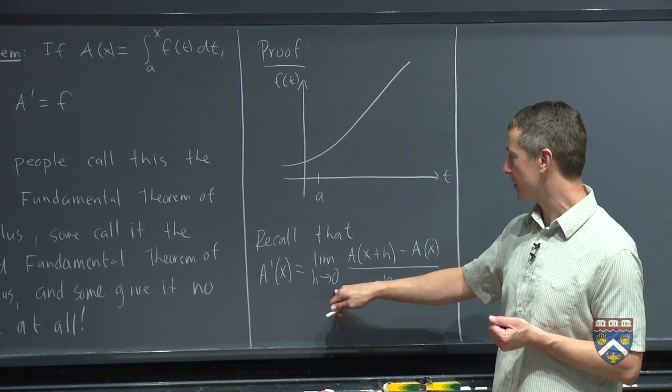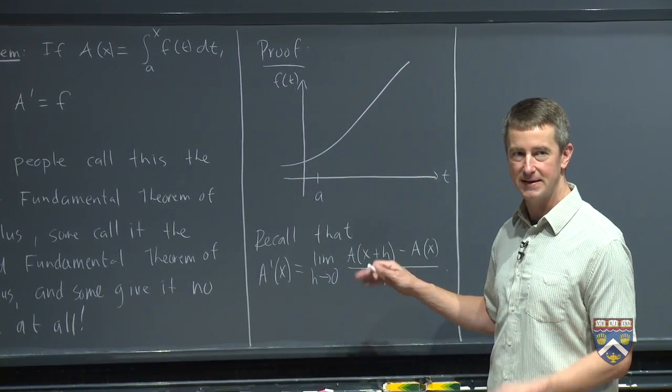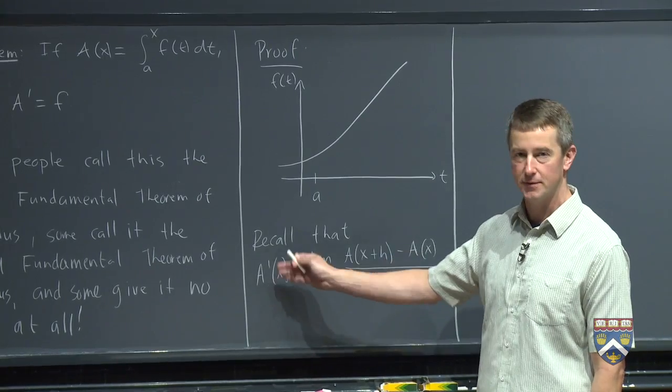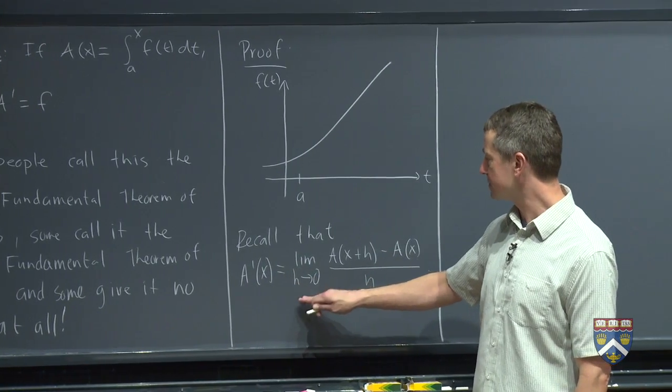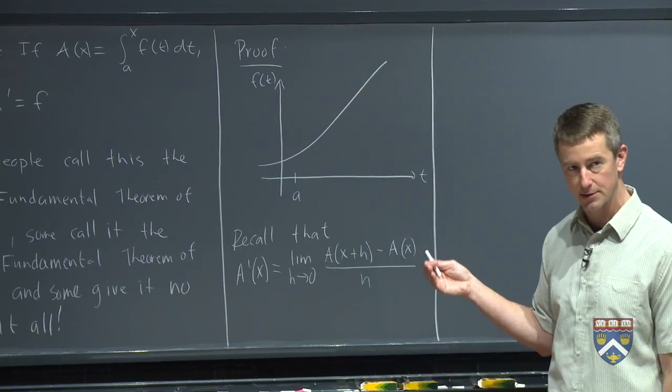So we can go back to our limit definition of the derivative. Remember that from a while ago? The limit as h goes to zero. Normally, we would write f's up here, but in this case, we're not taking the derivative of f, we're taking the derivative of a. So the limit as h goes to zero, a of x plus h minus a of x all over h.